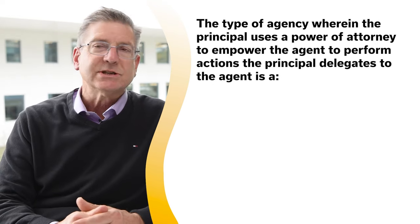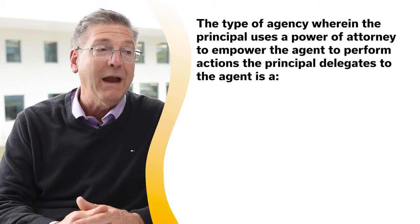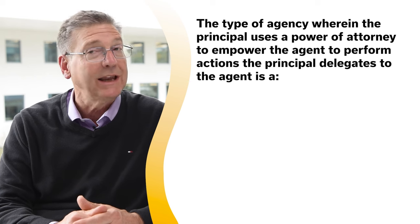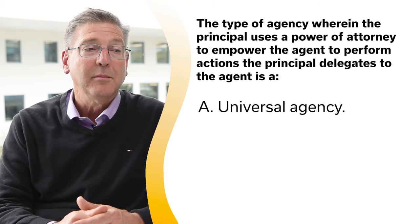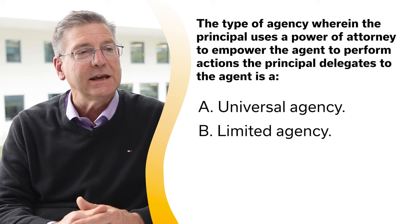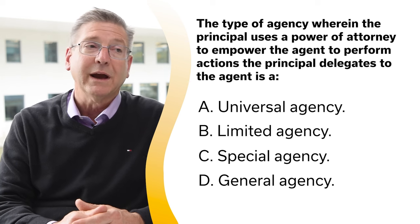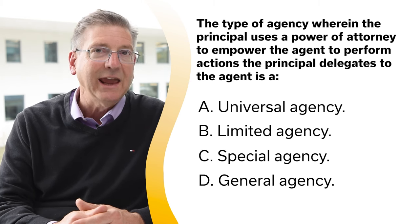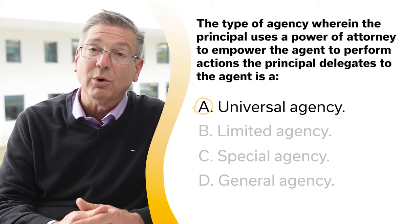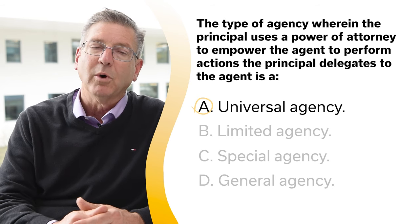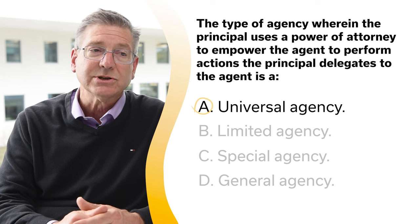The type of agency wherein the principal uses a power of attorney to empower the agent to perform actions the principal delegates to the agent is: A, universal agency; B, limited agency; C, special agency; or D, general agency. The correct answer is A, universal agency. In a universal agency, the principal uses a power of attorney to empower the agent to perform any and all actions that may legally be delegated to an agency representative.